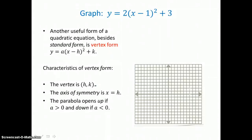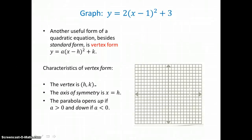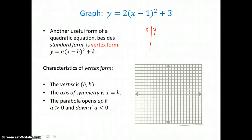Another useful form of a quadratic equation besides standard form is vertex form: y equals a times the quantity x minus h squared plus k. To graph this parabola, we'll make a table of values. We want to know the vertex. In vertex form, the vertex is h, k. h is subtracted from x, and k is added to the quantity squared.